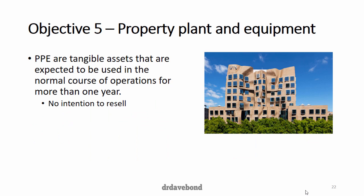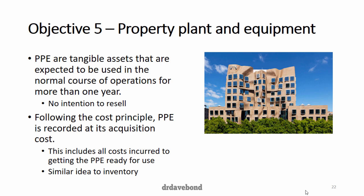Turning now to property, plant and equipment (PPE). PPE are tangible assets expected to be used in the normal course of operations for more than one year, with no intention to resell. If they're not tangible assets, they are intangible assets — the accounting is very similar. Following the cost principle, PPE is recorded at its acquisition cost, very similar to inventory. The entry is debit PPE, credit cash or payables.